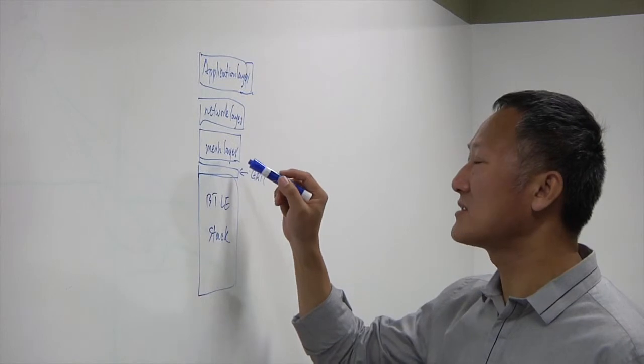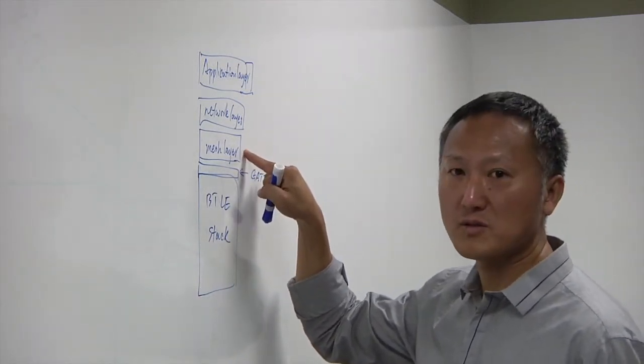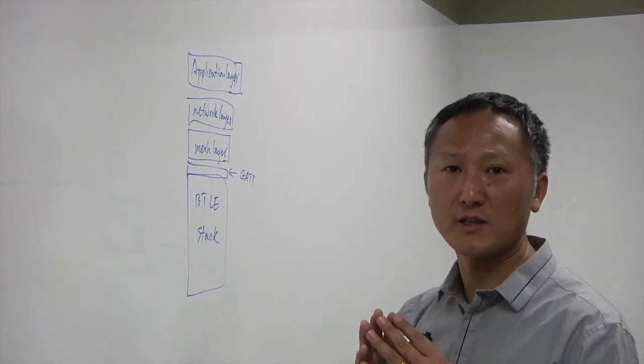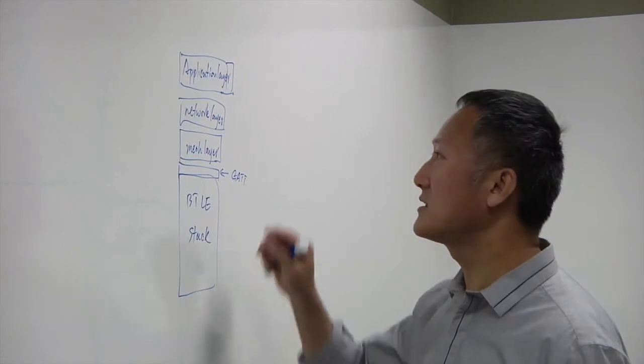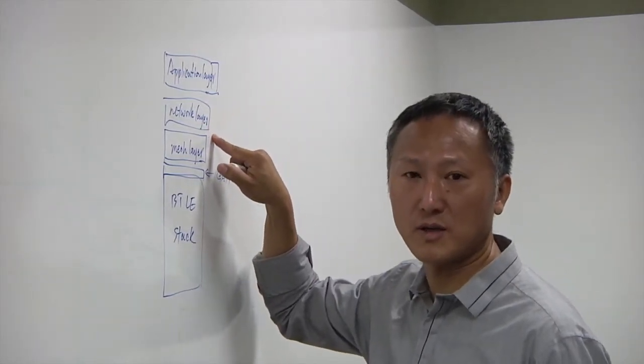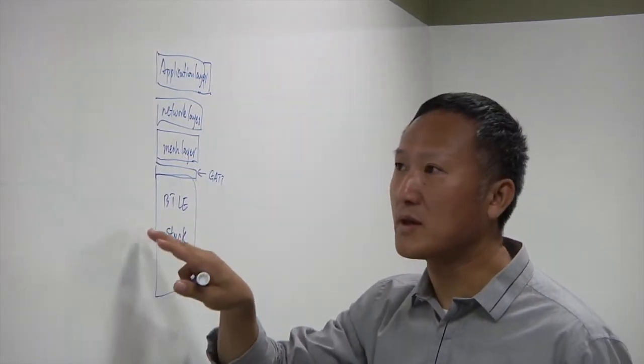So it's a layered architecture. It includes the mesh layer, which responds to the node communication and the node synchronization. On top of that is the network layer. What the network layer is doing is routing, so you find the best path from one node to the other.